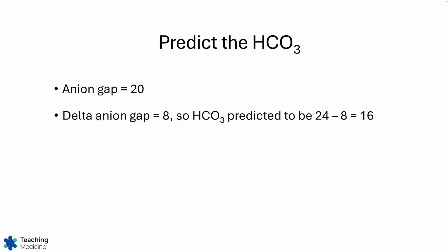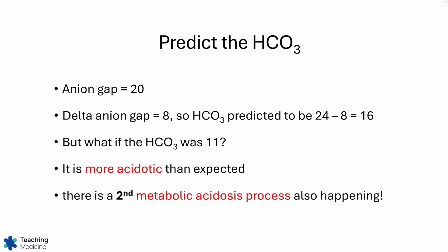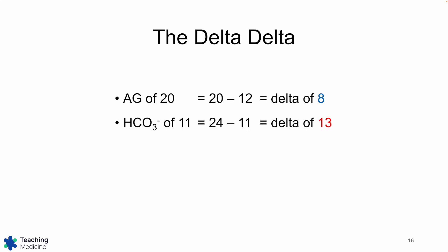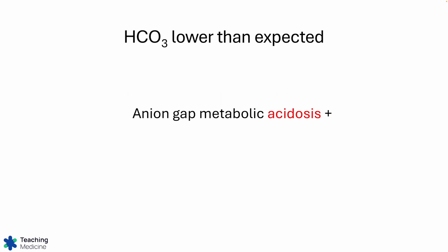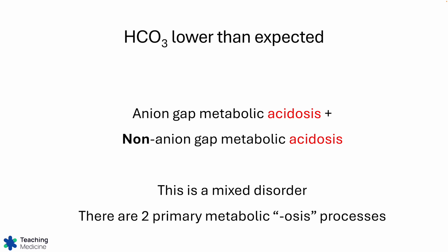Another example: anion gap of 20, so the predicted bicarb is again 16. But what if the bicarb was actually 11? The bicarb is more acidotic than expected, so there must be a second metabolic acidosis process happening. We have a delta of 8 for the anion gap, but a delta of 13 for the bicarb — a negative delta-delta value. Since the anion gap is elevated, we have an anion gap metabolic acidosis, and because the bicarb is lower than predicted, we must also have a non-anion gap metabolic acidosis. This is a mixed disorder with two different primary metabolic processes.